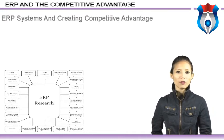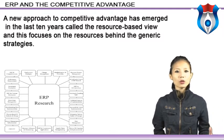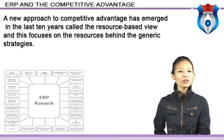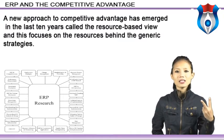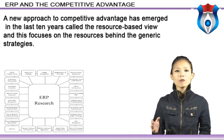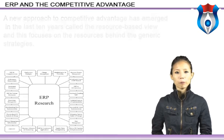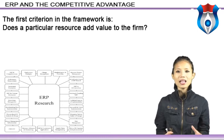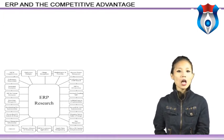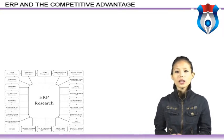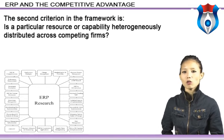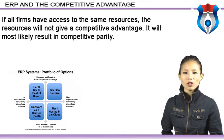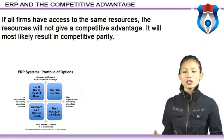A new approach to competitive advantage has emerged in the last 10 years called the resource-based view, which focuses on the resources behind the generic strategies. Resources that enable an organization to perform specific strategies are emphasized. Building on two basic assumptions — the resources and capabilities possessed by competing firms may differ, and these differences may be long-lasting — the first criterion is: does a particular resource add value to the firm? This is related to the possibility to reduce cost or increase revenue through product differentiation. The second criterion is: is a particular resource or capability heterogeneously distributed across competing firms? If all firms have access to the same resources, those resources will not give a competitive advantage but will most likely result in competitive parity.